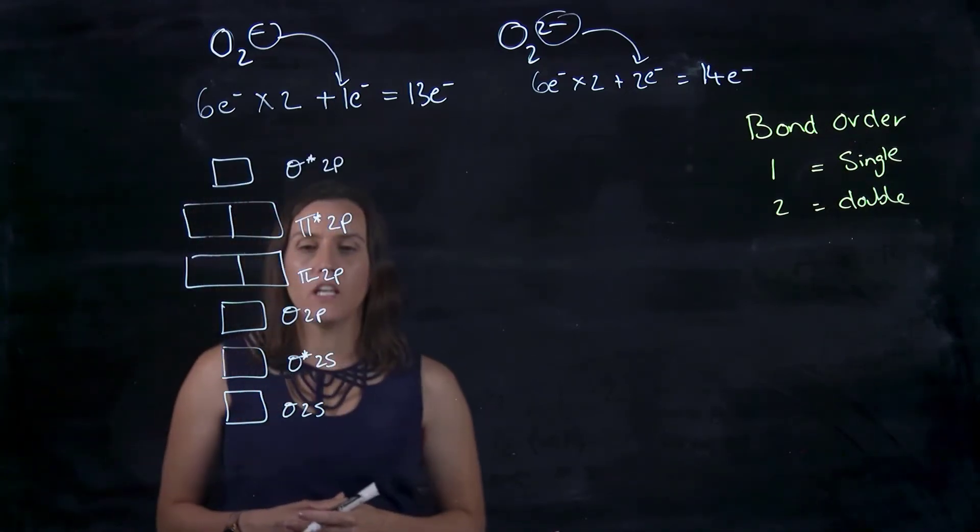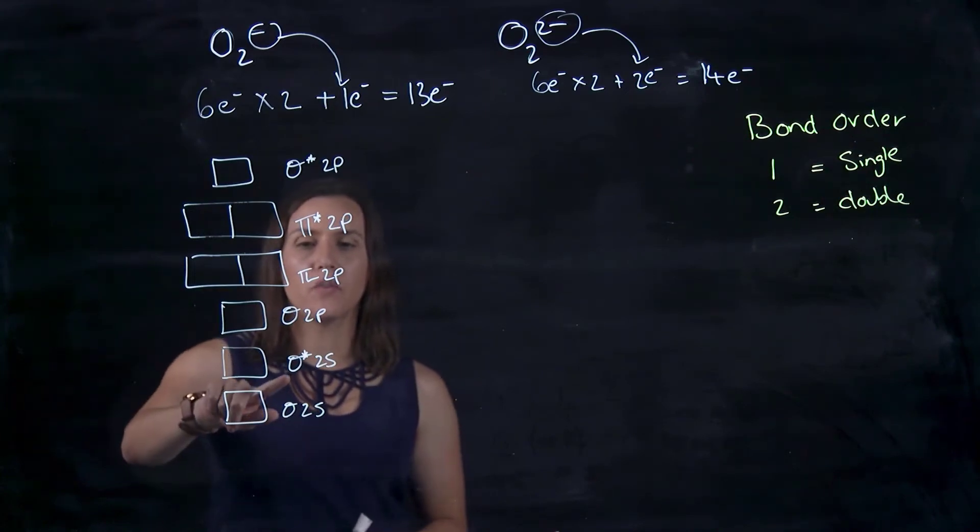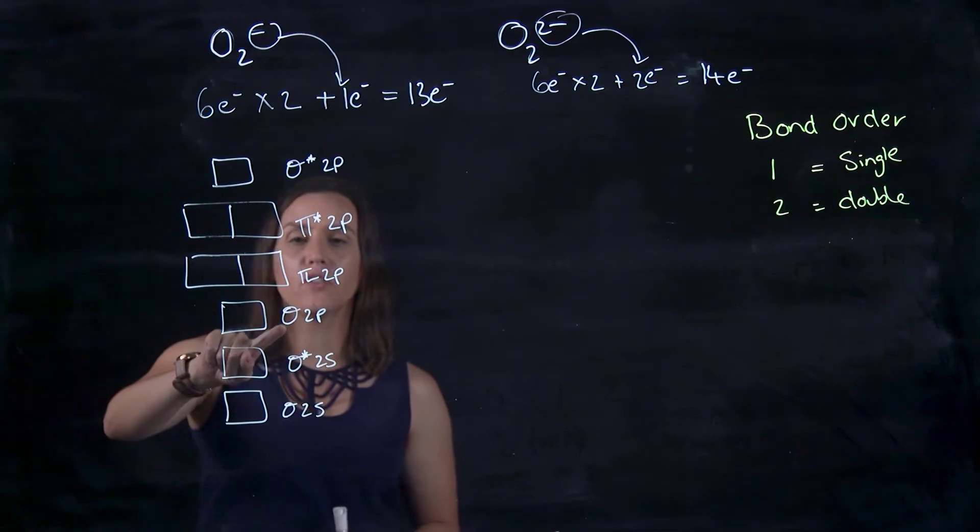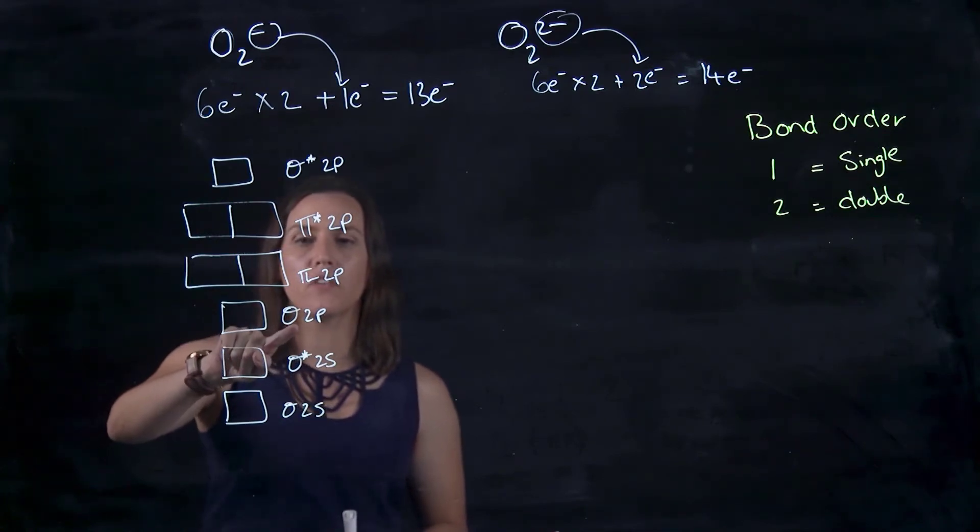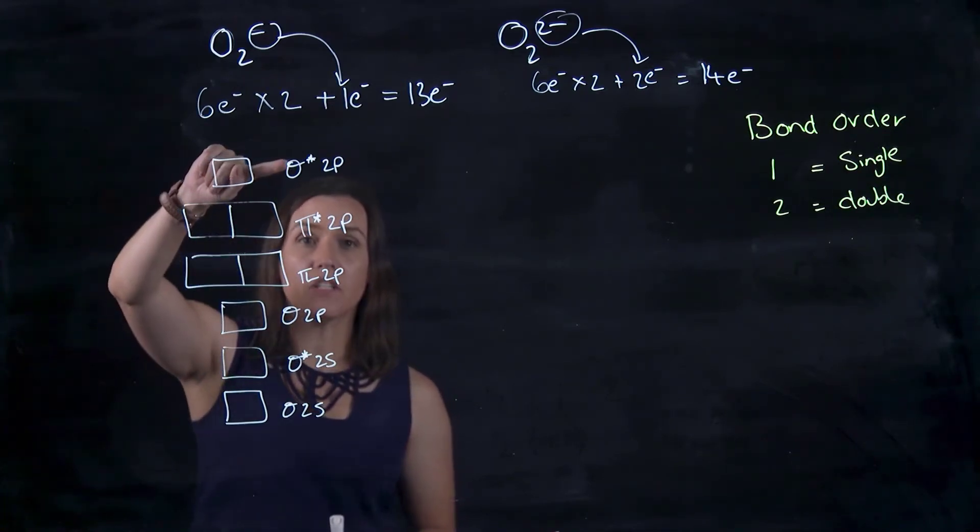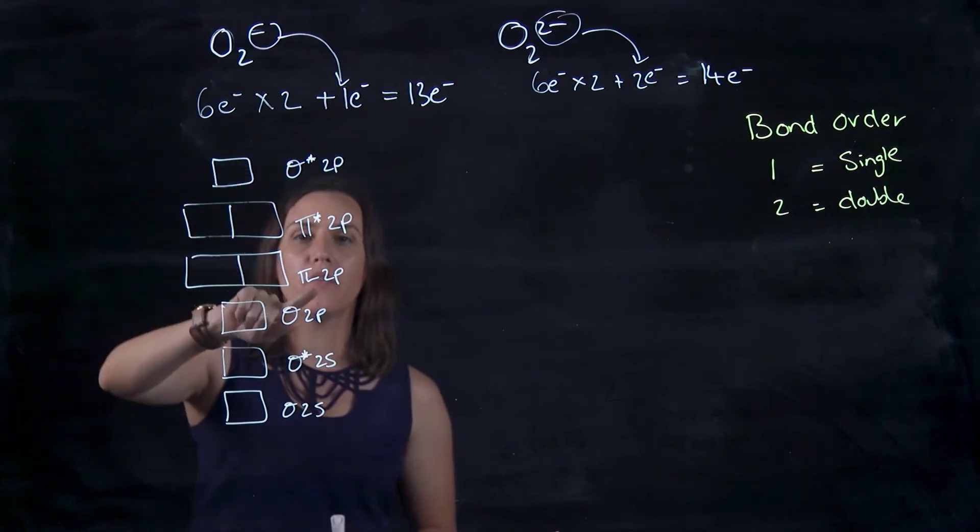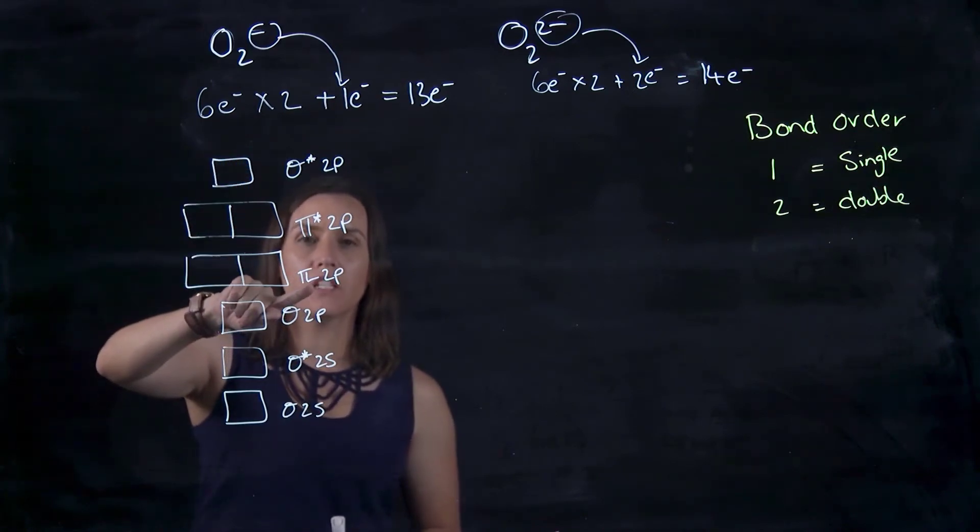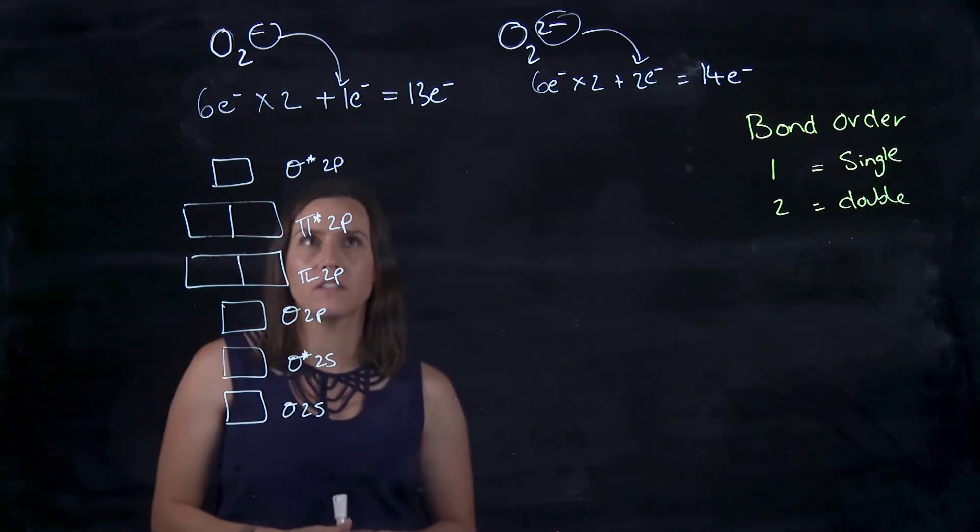So with this one here, we've got the sigma two S at the bottom, and then we've got the anti-bonding. So the bonding, anti-bonding, then we've got the two P sigma bond, we've got the bonding, and the anti-bonding is all the way up the top now. And then we've got the pi bonding. So the two orbitals that do the pi bonding, and then we've got the anti-bonding for those ones.